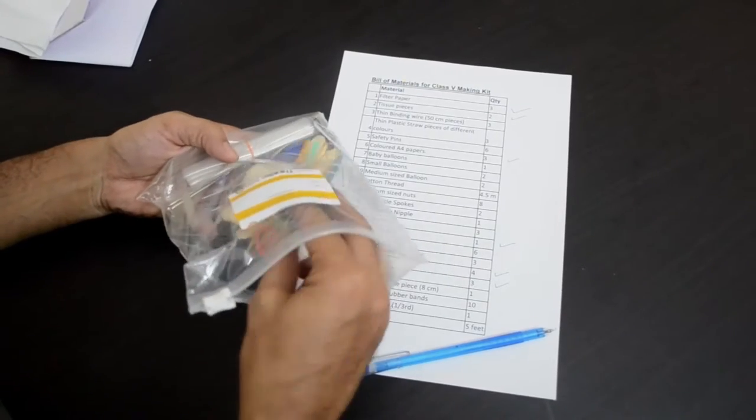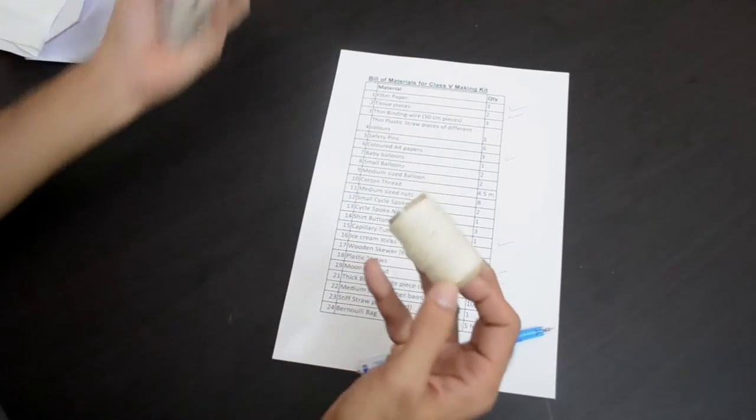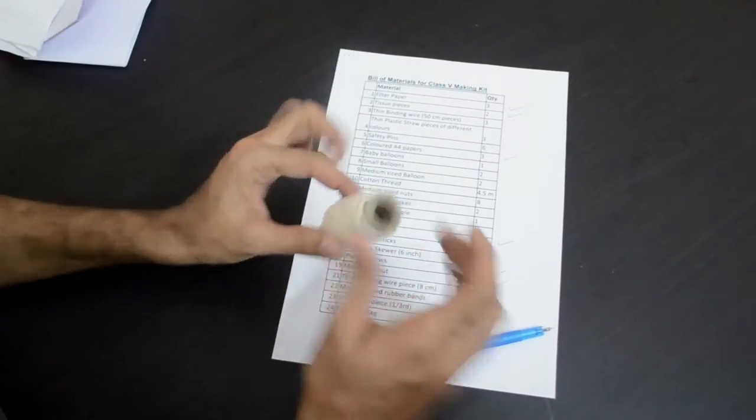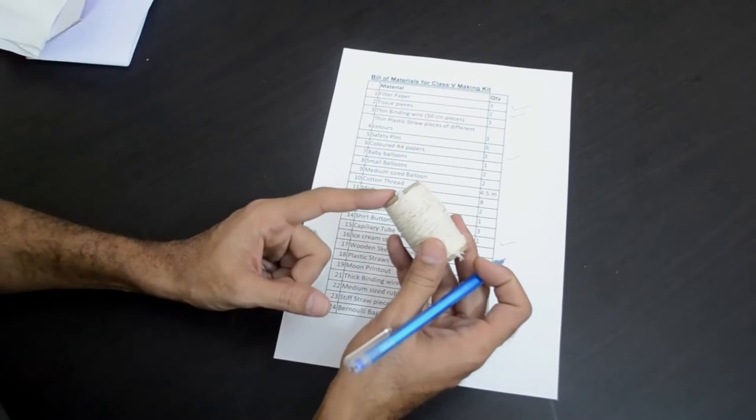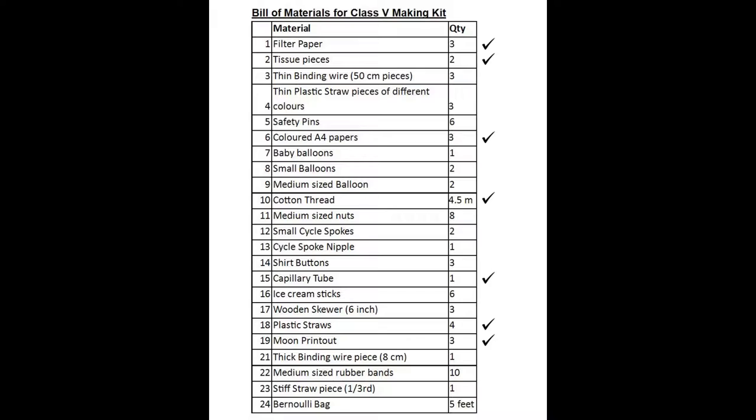You would also need the cotton thread for a bunch of activities. We have given the cotton thread together for all activities. We have around 4.5 meters of cotton thread here, which is item number 10 in our bill of materials.